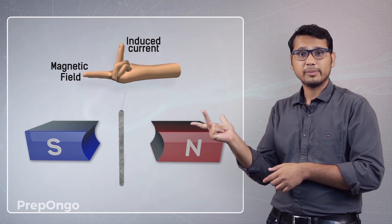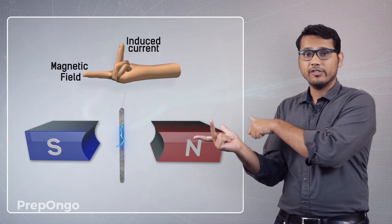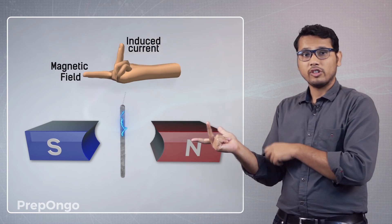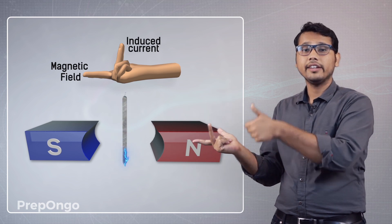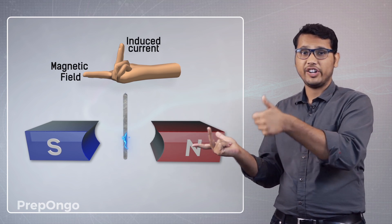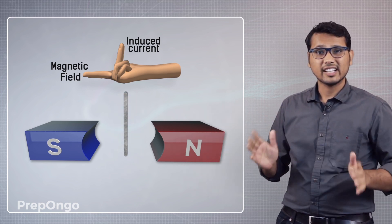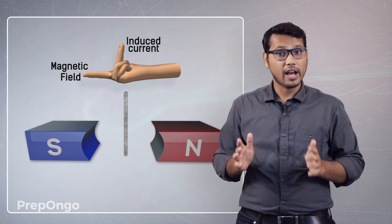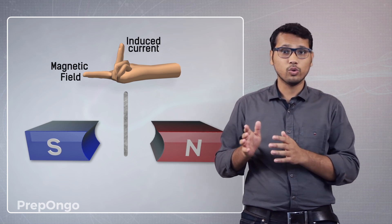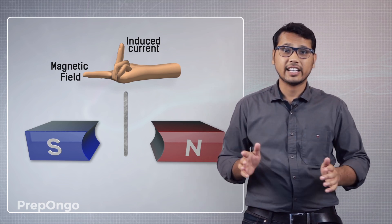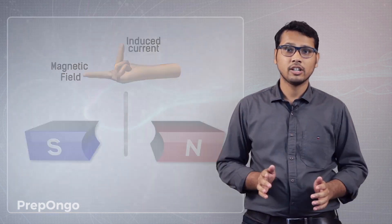With the conductor moving inwards, you will find that the current will be induced in the upward direction. So this is how we apply Fleming's Right Hand Rule to know the exact direction of the induced current.